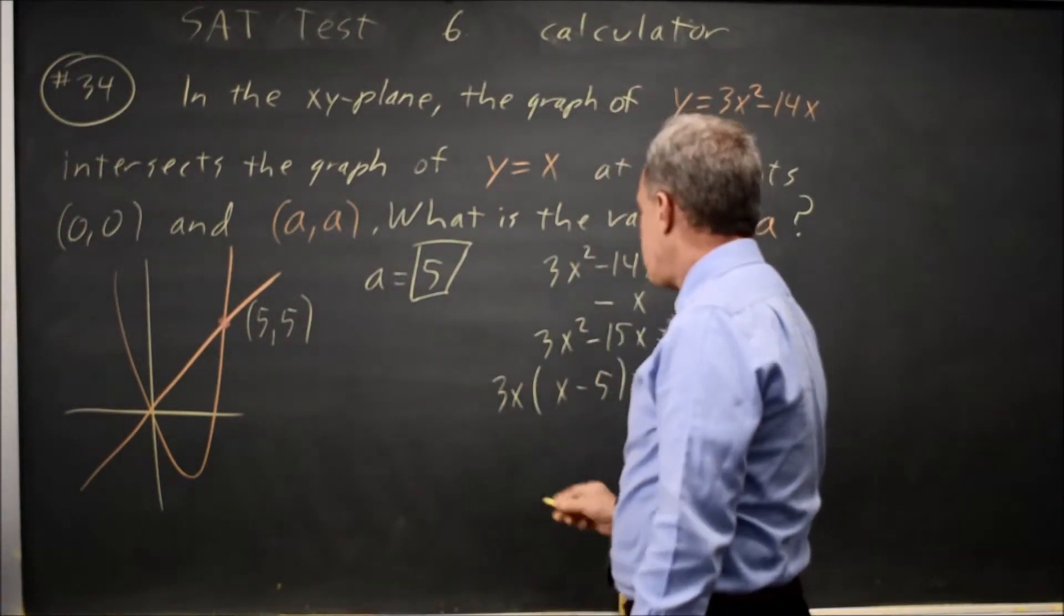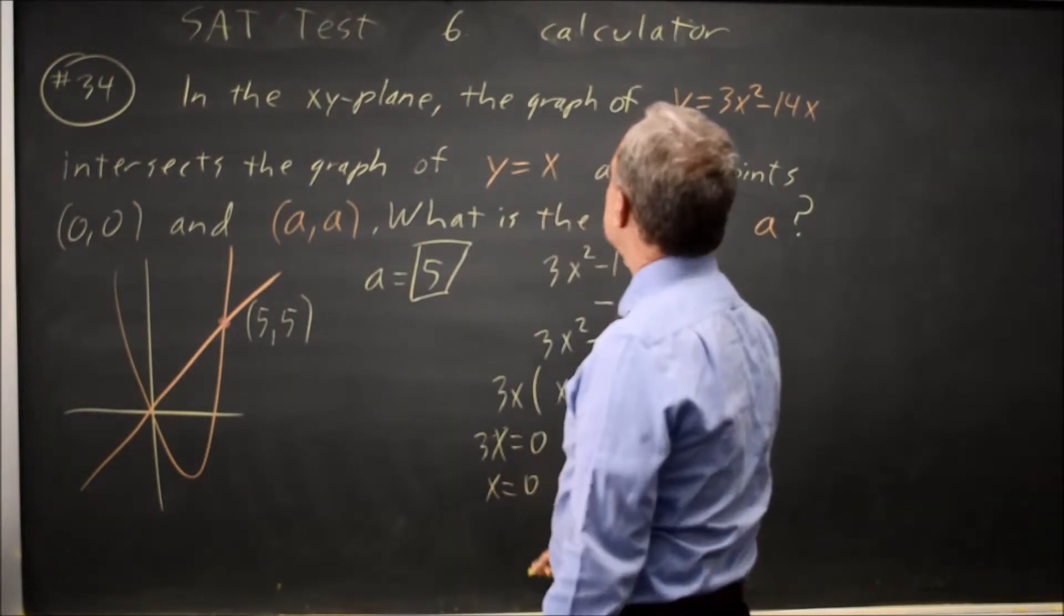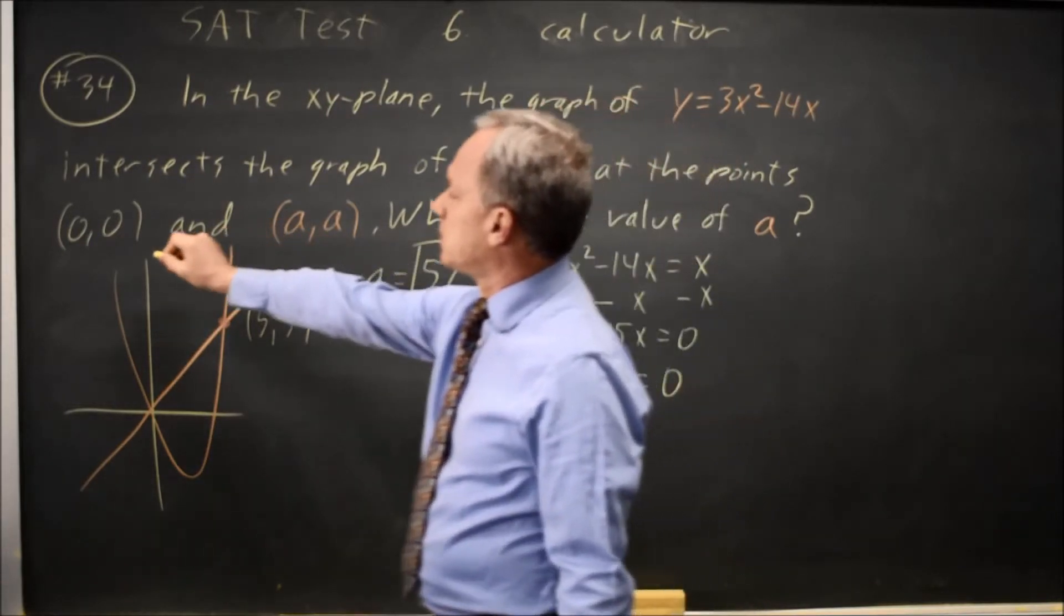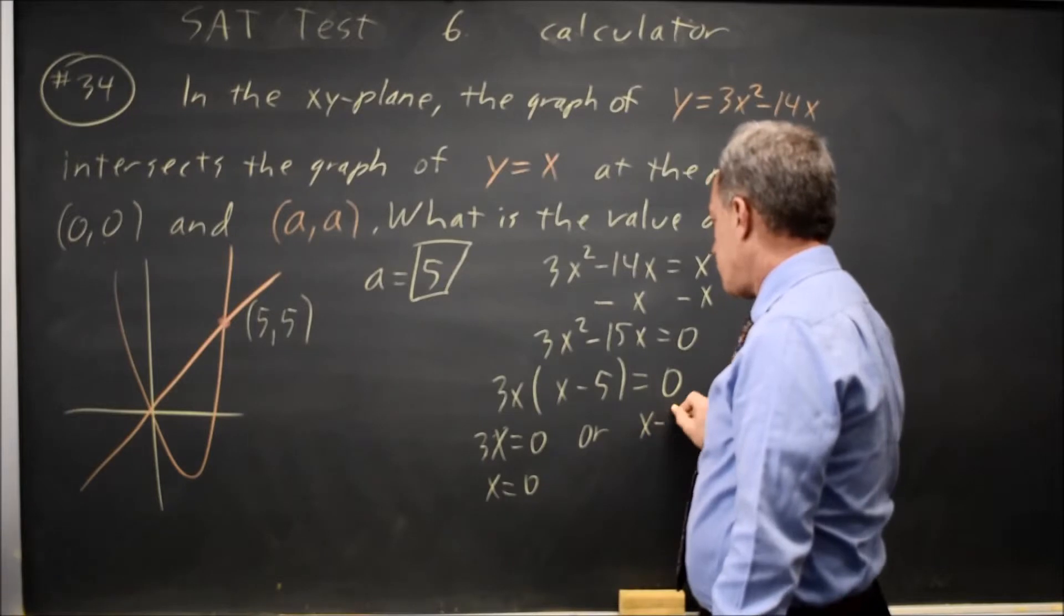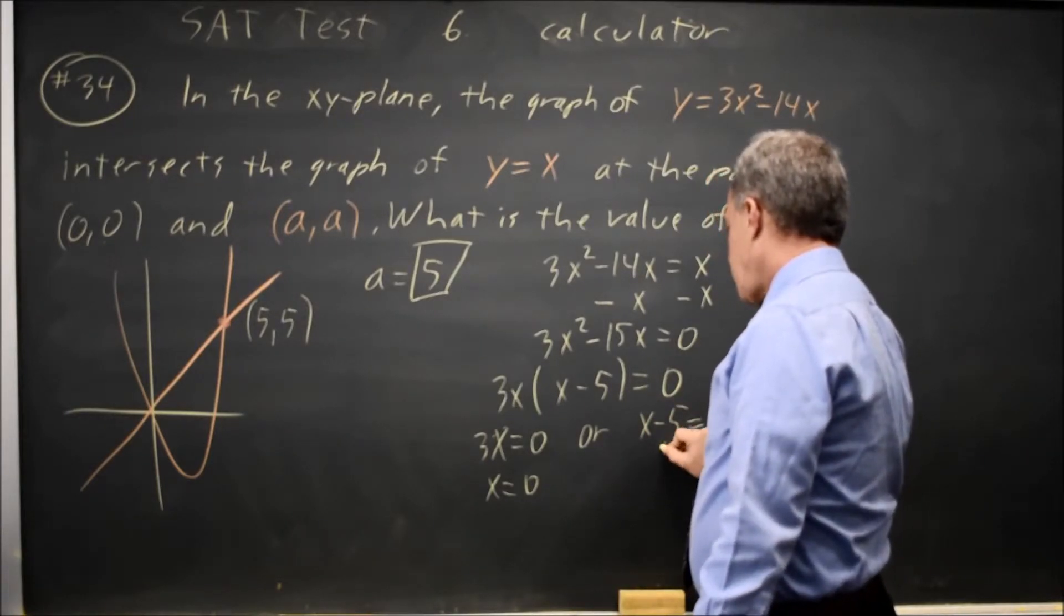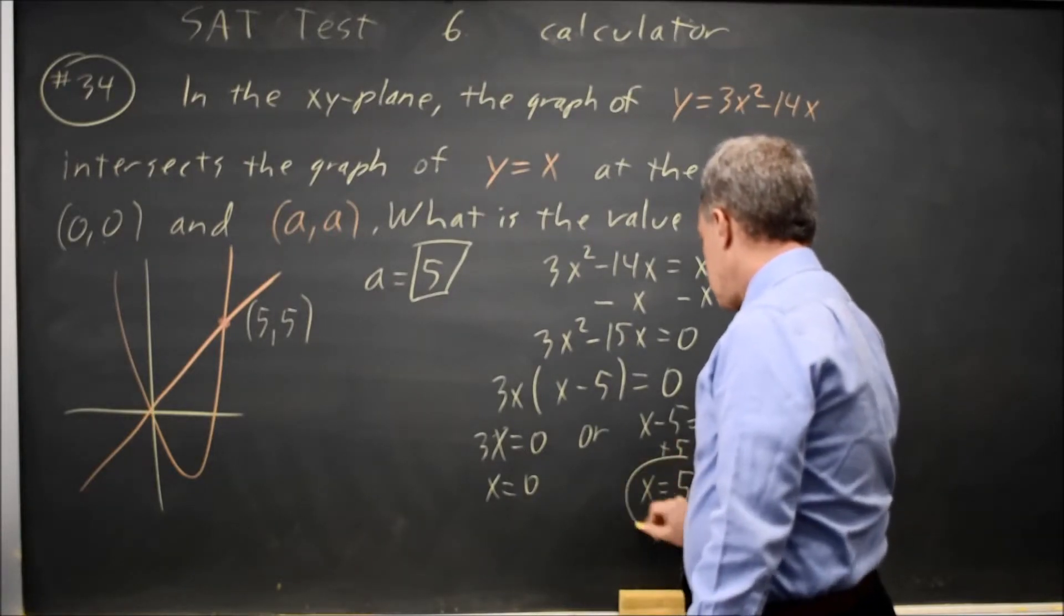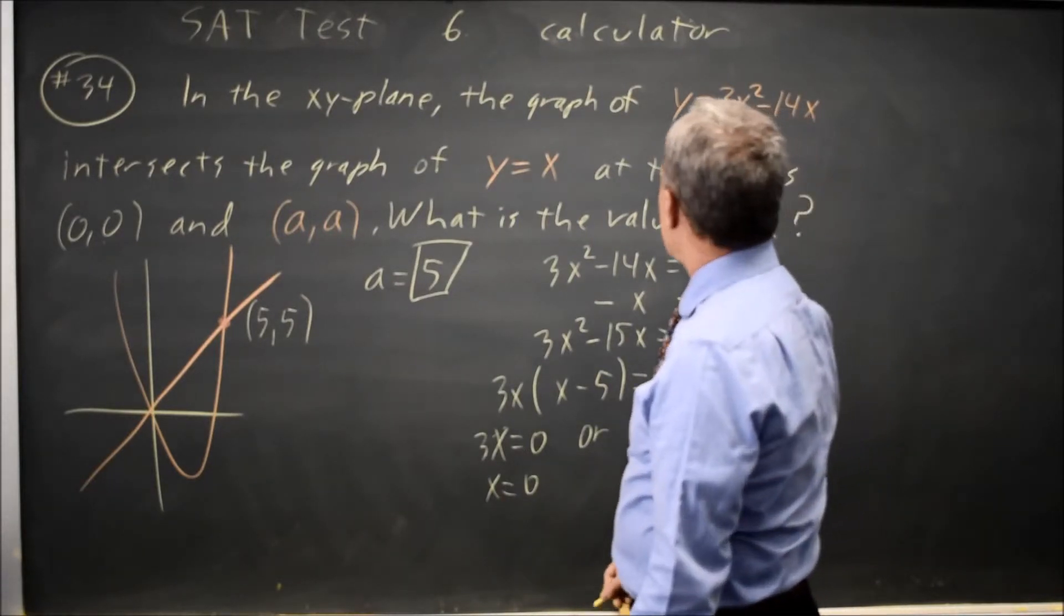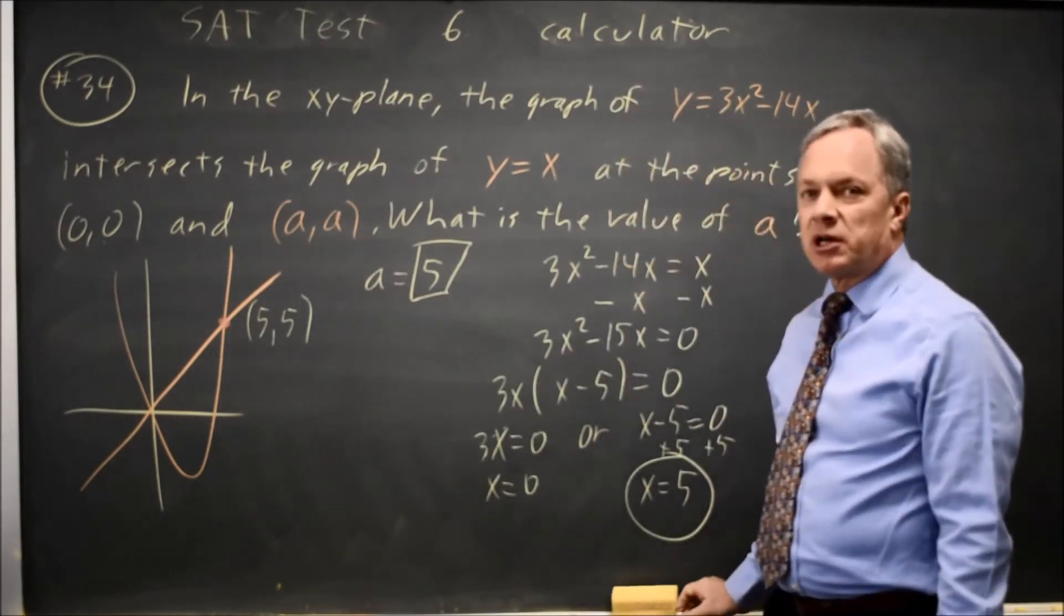That product equals 0, so either 3x equals 0, which means x equals 0—that's the answer they gave us, the origin—or the second factor equals 0. x minus 5 equals 0. Add 5 to both sides. x equals positive 5. For A not equal to 0, the value of A would be positive 5.